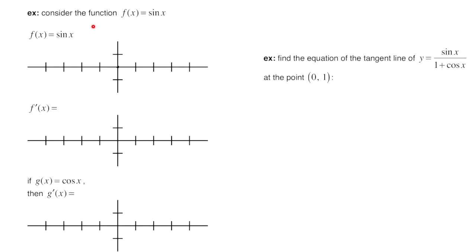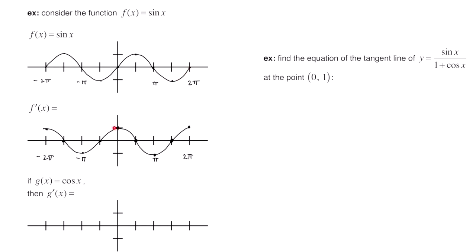Consider the function f of x equals sine of x — here's its graph. We want to look at its derivative. At x = 0 the slope of the tangent line is positive 1, so f prime goes up to a height of 1. At the peak the slope is 0, so we go to 0. At pi the slope is negative 1, so we go down to negative 1. Again at the next zero-crossing the slope is 0, and then back to positive 1. Continuing the graph, you'll notice this is the graph of cosine, so the derivative of sine is cosine.